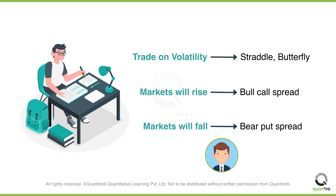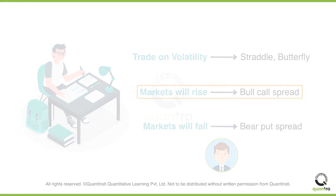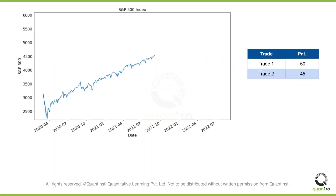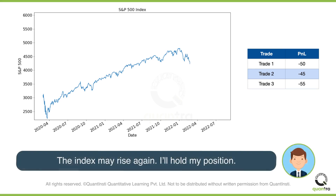Since John has a bullish view of the index, he understands that he should set up the bull call spread on S&P 500 options. But this time, the market goes against him. John feels that the index may rise again, so instead of exiting the trade, he holds on to the trade. But he eventually ends up making losses.